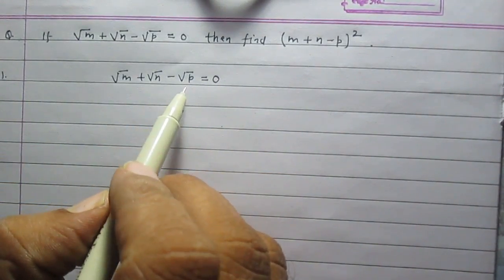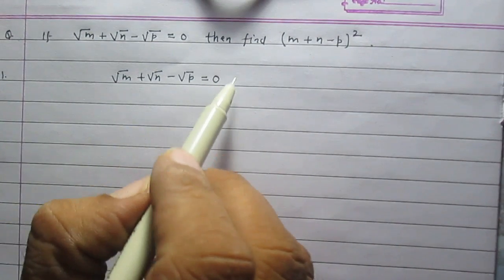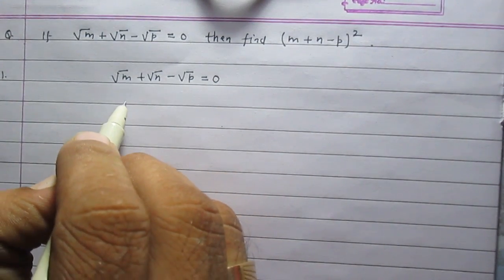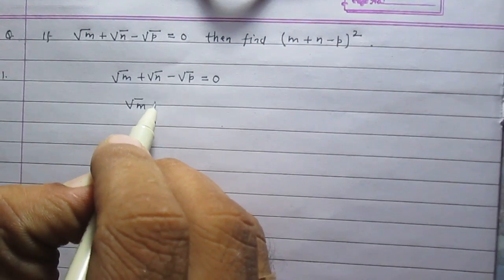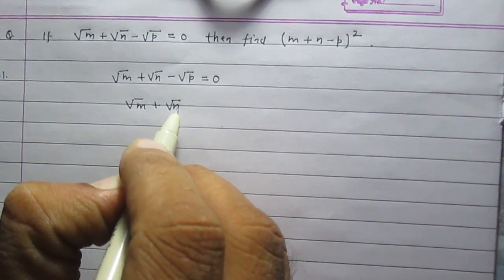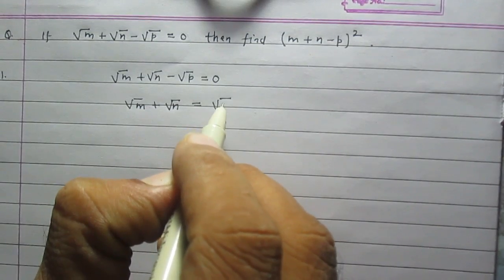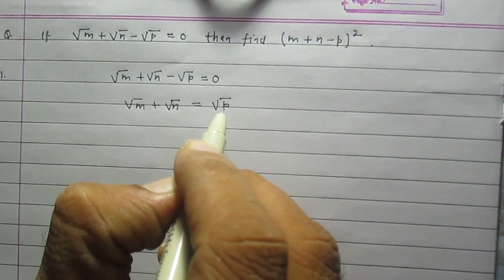We can transpose square root of p to the right hand side. So we will get square root of m plus square root of n is equal to square root of p.